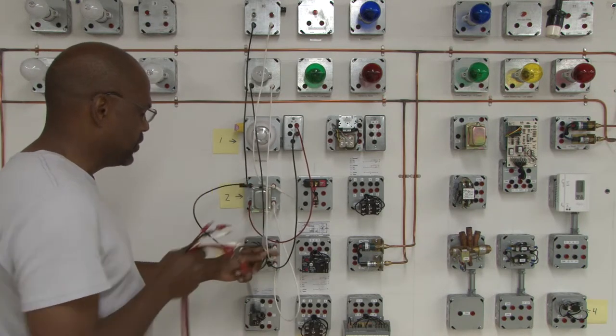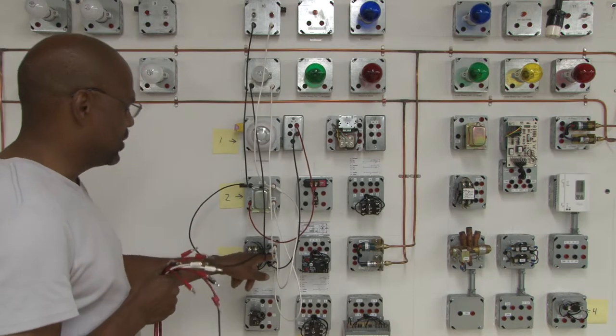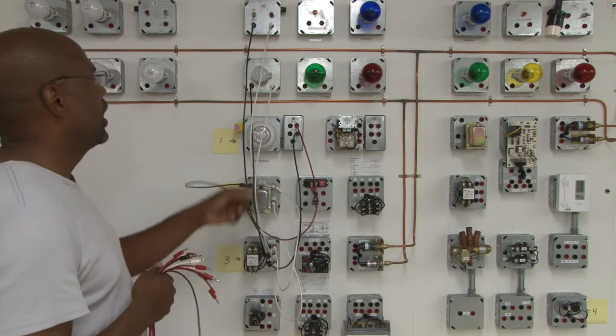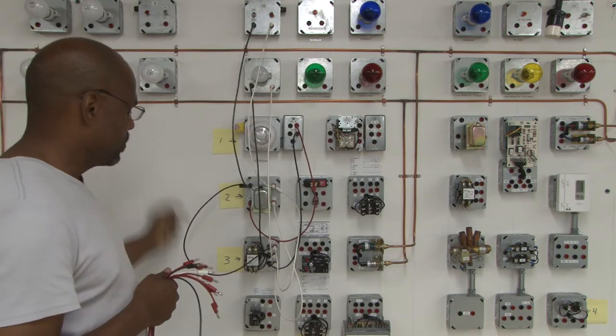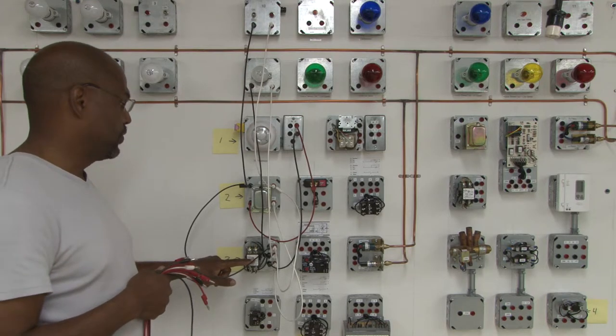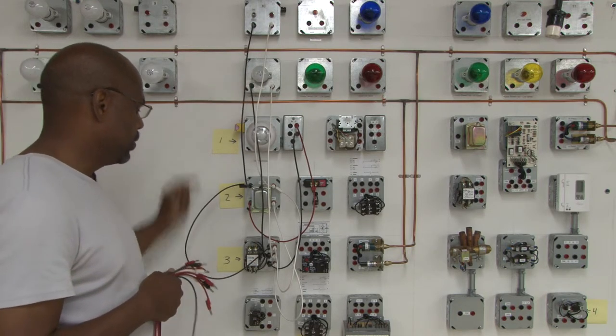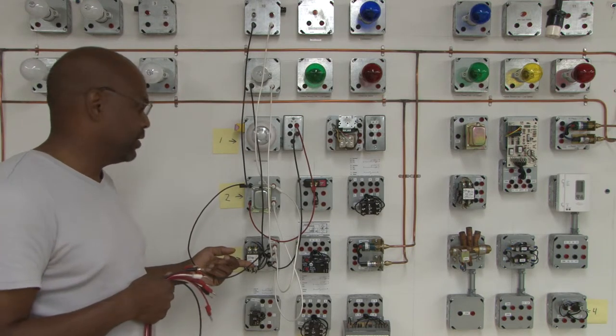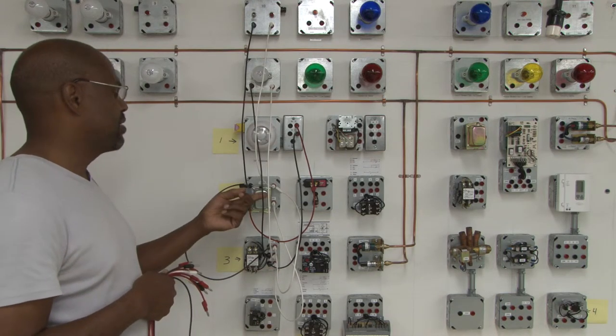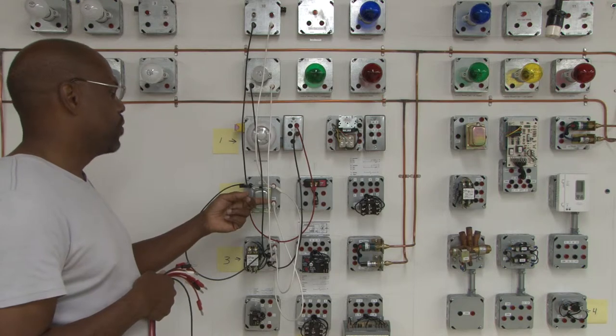Now the switching is done by the contactor and this is the outlet terminals of the contactor T1 and T2 and it goes straight to the load. So when this contactor becomes energized it will send power to the load. And the only way to energize the contactor is by having control voltage at the coil which is coming from the transformer.